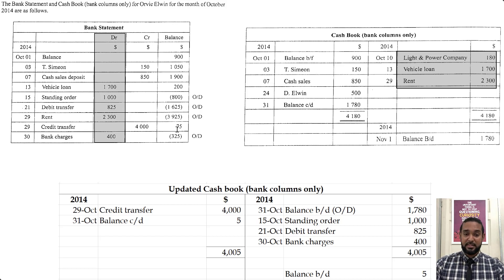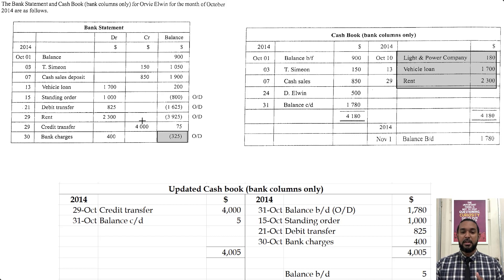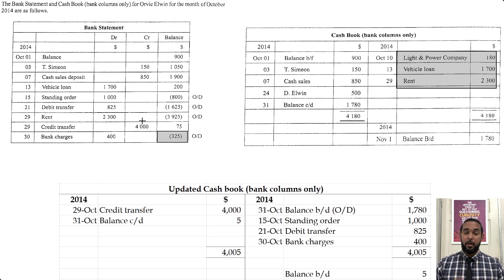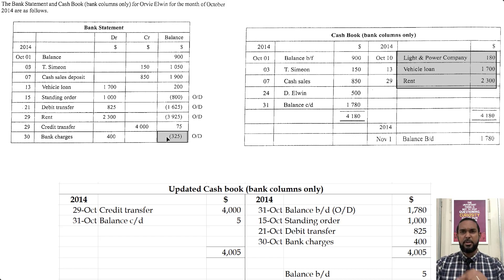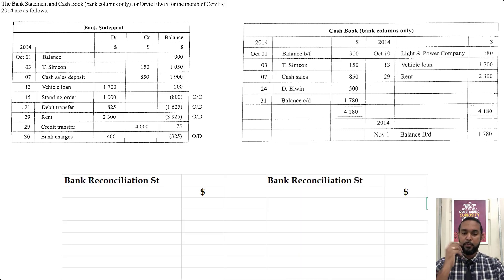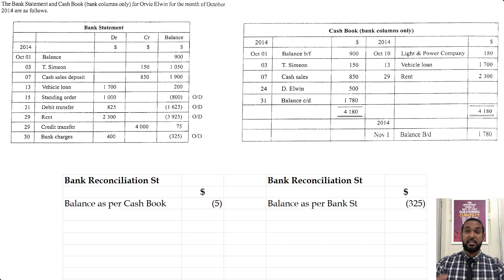That updated cash book balance of 5 still doesn't equal the bank statement balance of 325, so now we do the bank reconciliation statement. I've done two versions — one starting with the balance as per cash book and one starting with the balance as per bank statement — just to show that it doesn't matter which way you do it, you'll get the same answer provided you follow the correct protocols.